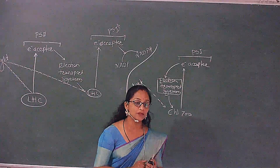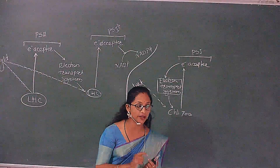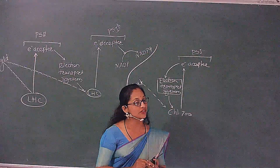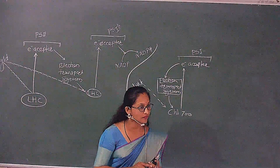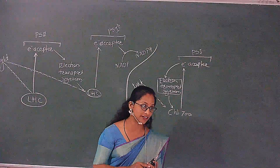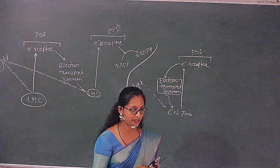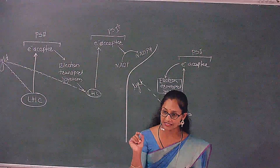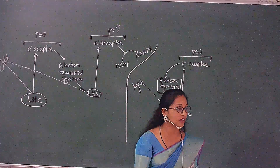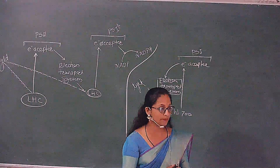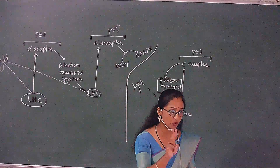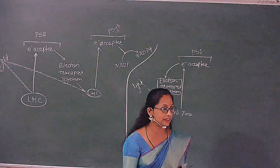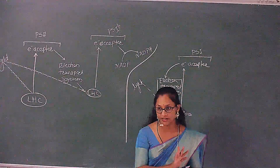Which system is involved in cyclic type of phosphorylation? PS1. Its wavelength is 700 nanometers — we can call it P700, and chlorophyll A700. For non-cyclic type of photophosphorylation, both PS2 as well as PS1 are involved.